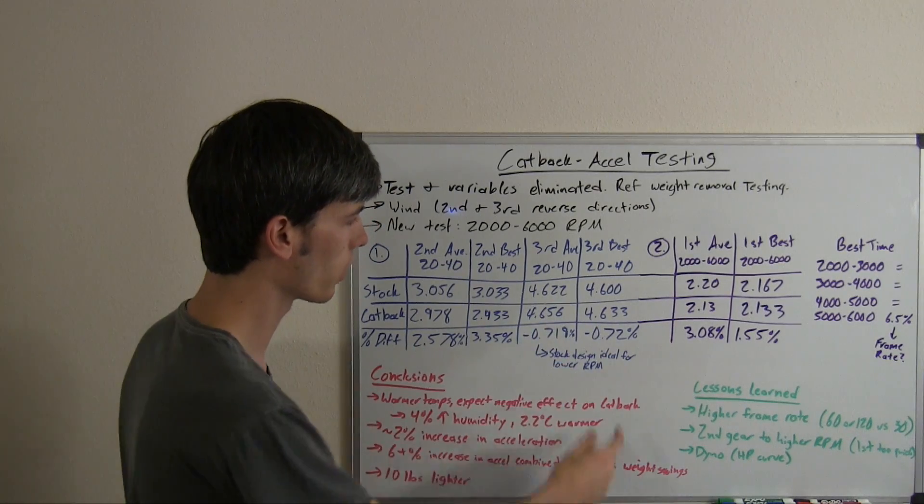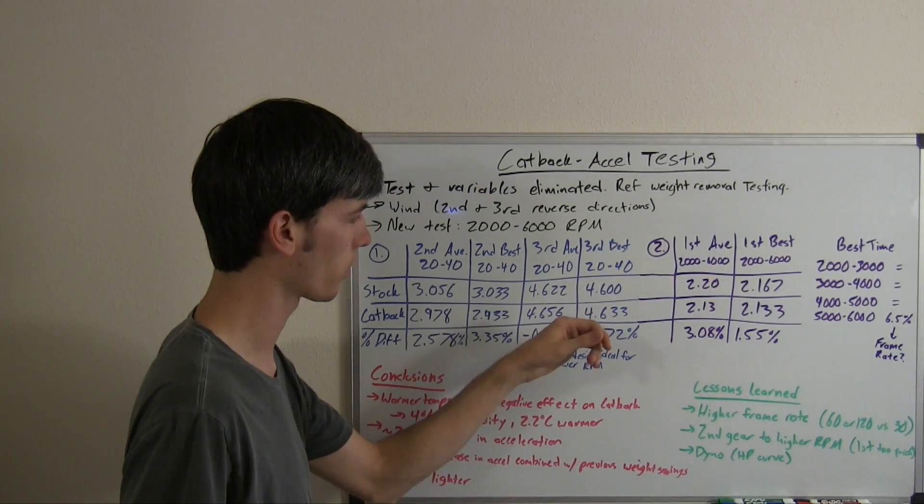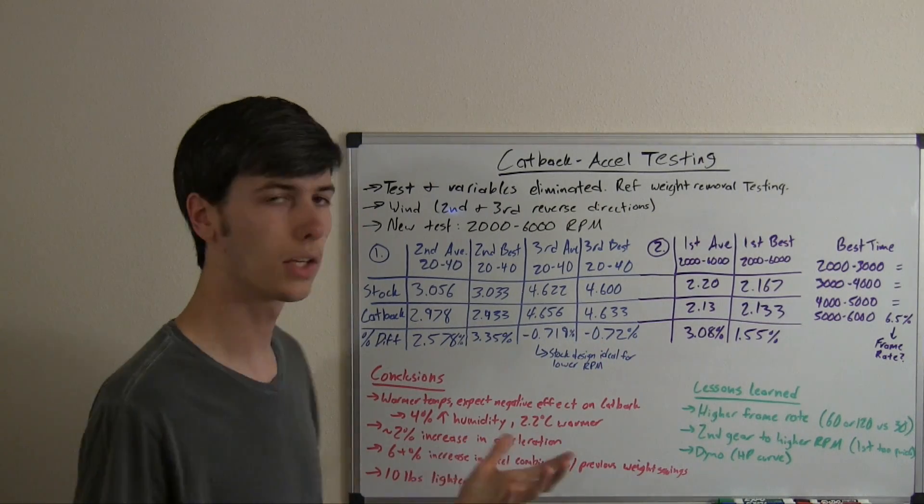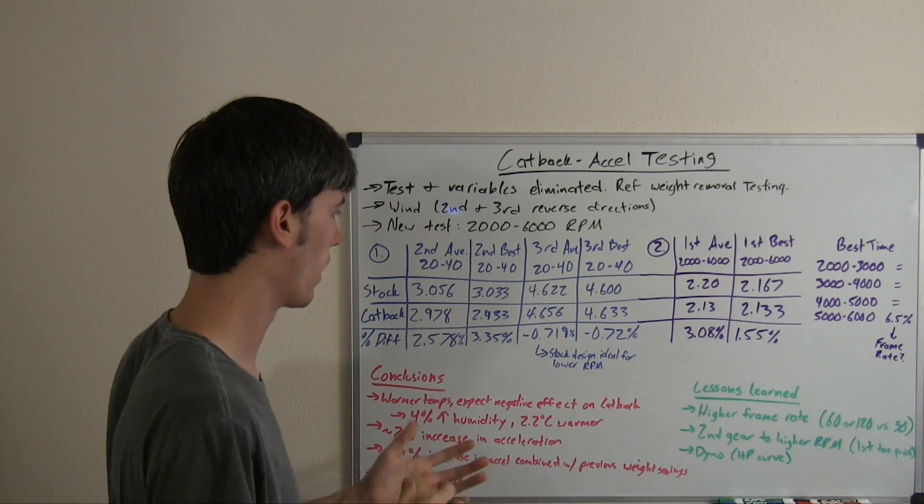If we look at the best time, we also get the same thing, 4.6 versus 4.633, giving us a 0.72% decrease in acceleration.